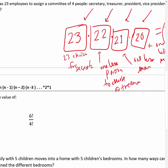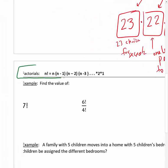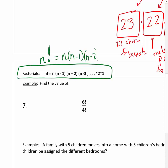Notice how we multiplied 23 by one less (22), then one less (21), then 20. That leads us to factorials. A factorial is written as a number followed by an exclamation point. It means take that number and multiply it by every number less than it until you get to 1. That seems theoretical and complicated, but once we do an example it'll make sense.